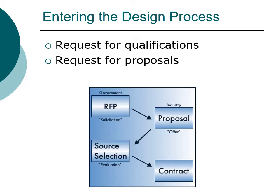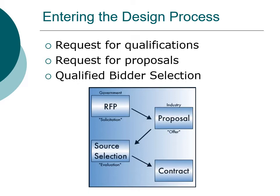The second is the request for proposals, where the request for qualifications is really part of the request for proposal. The owner is soliciting proposals for engineering services, and as part of that, requesting a statement of qualifications from the engineering firms. The last is the qualified bidder selection, where the owner has a list of previously qualified companies who are then asked to submit a proposal in response to a request for proposal, and the owner chooses from that list.